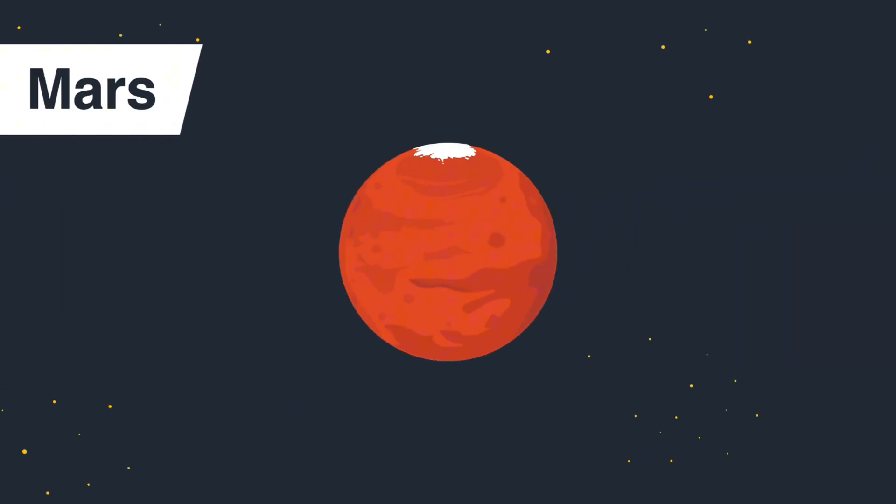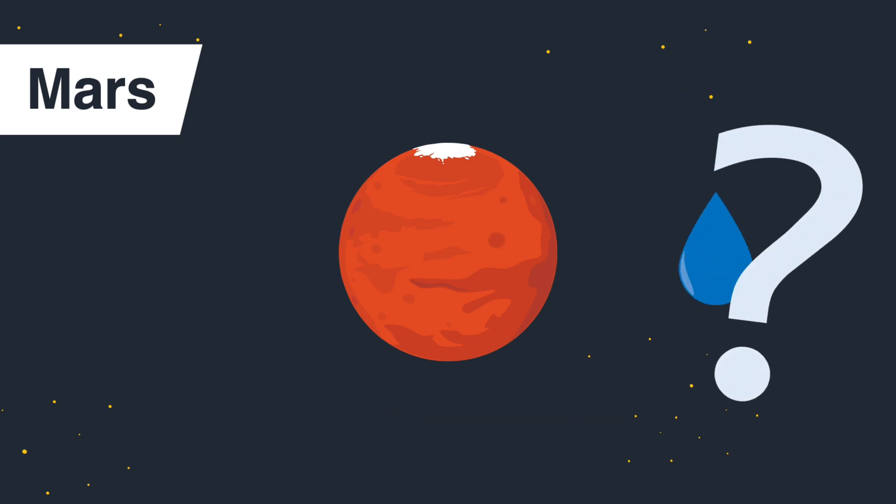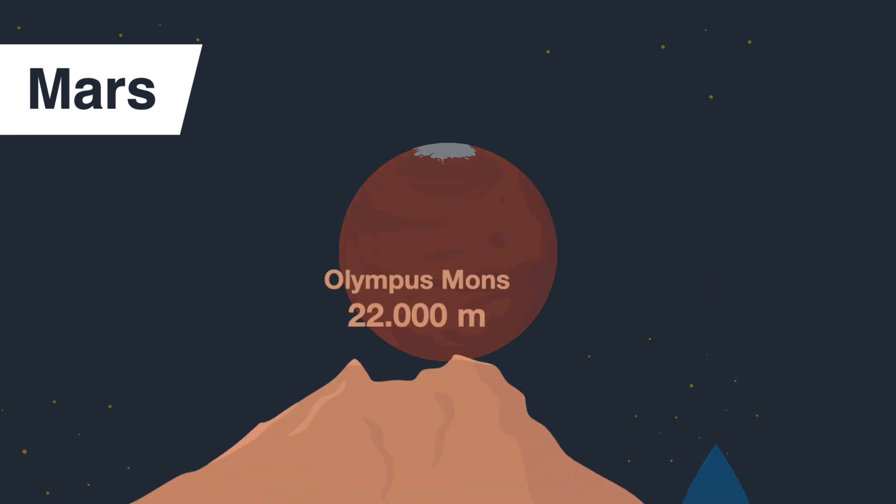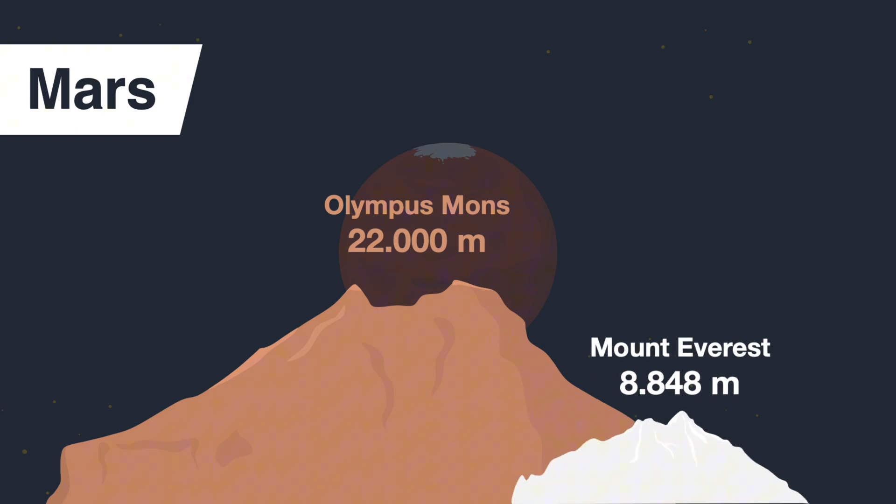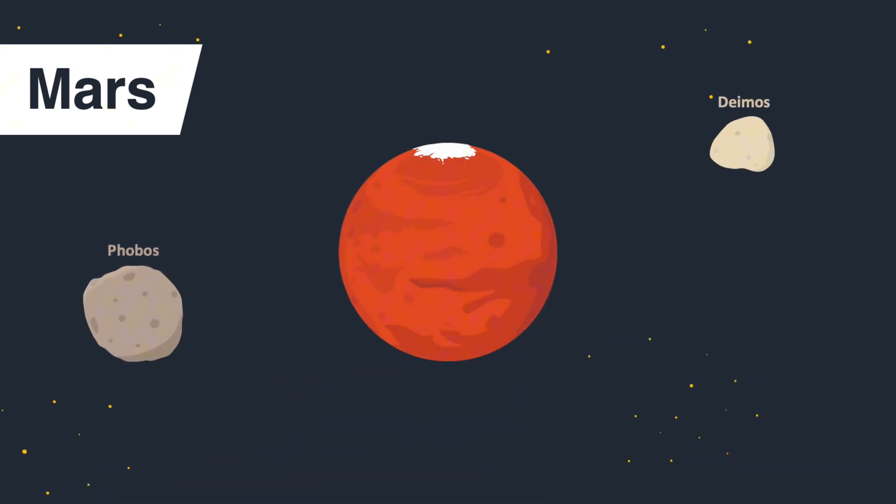Mars, also referred to as the Red Planet, is about half the size of Earth. Mars captivates us with its rusty deserts and potential for past life. Evidence of ancient riverbeds suggests Mars once had flowing water. The Red Planet hosts the largest volcano in our solar system, three times taller than Mount Everest. Mars also has a canyon system that dwarfs the Grand Canyon, and the planet is orbited by two moons.